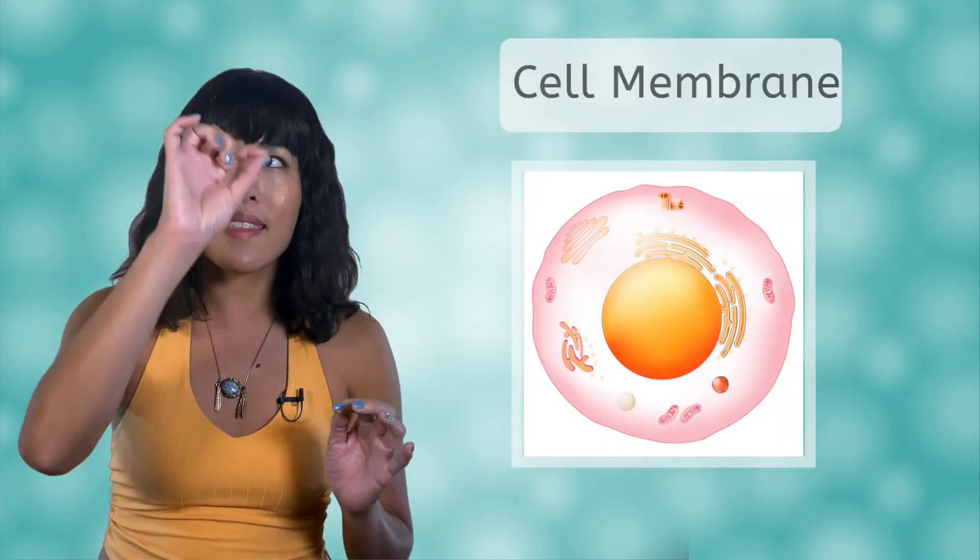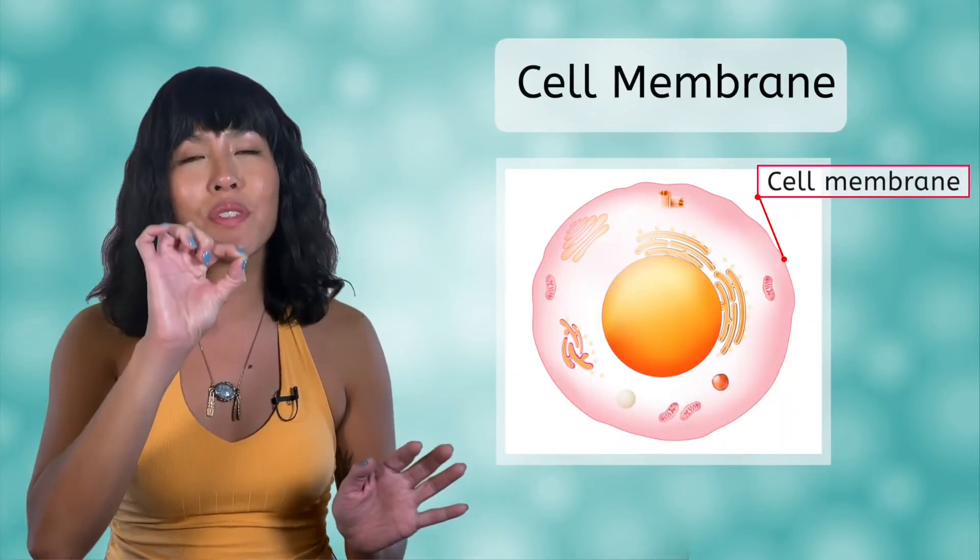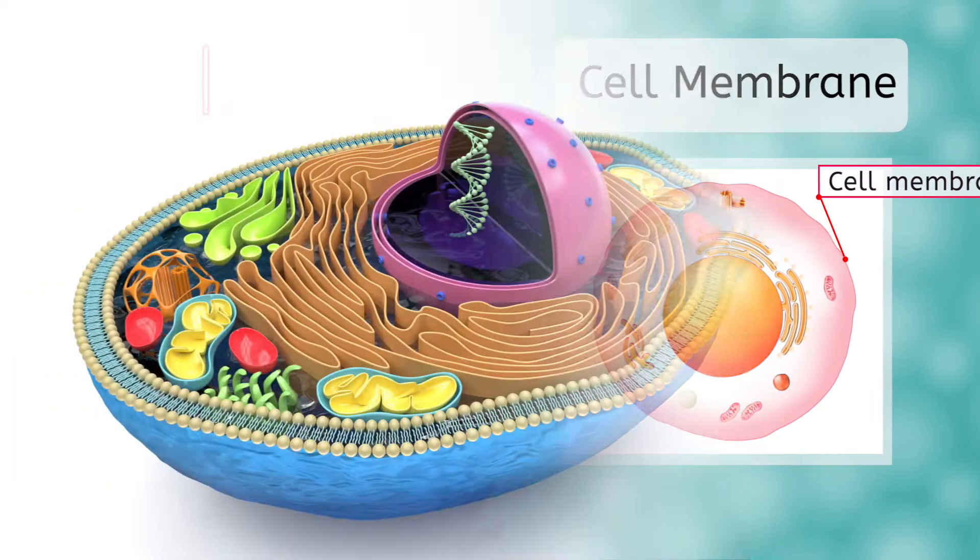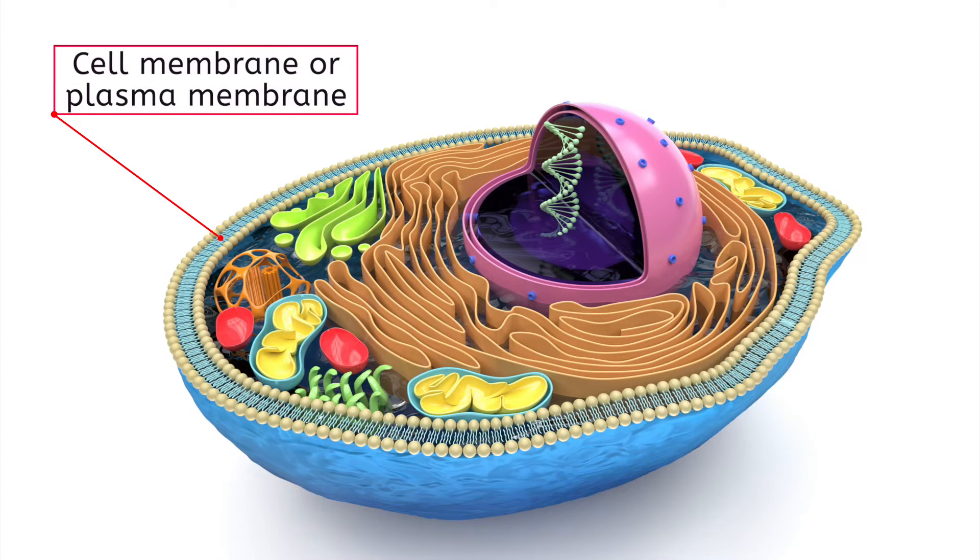On most cell diagrams, the cell membrane is simply drawn as a thin line around the outside. But it is so much more complicated than that. In this 3D rendering of the cell, we can see that the membrane looks like a double layer of complex molecules. This is closer to being accurate, but it's still overly simplified and missing a few things which we'll discover as we go through the lesson.